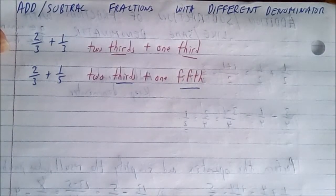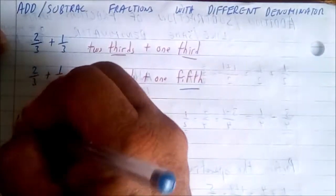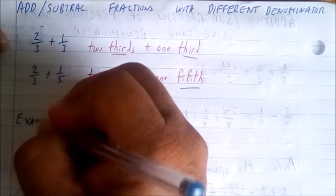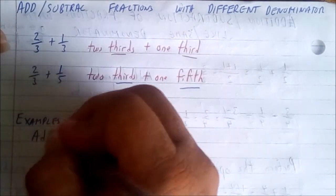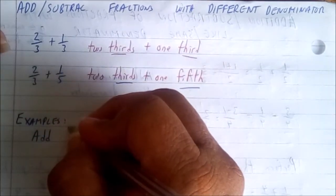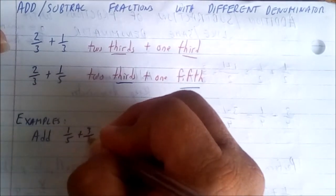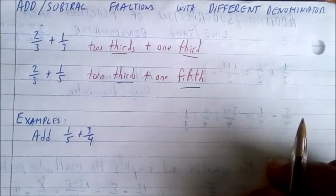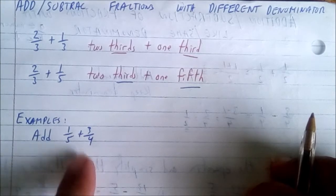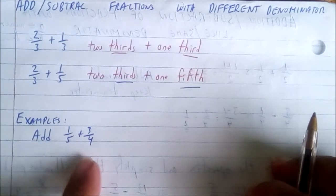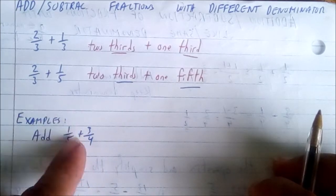So let's start with a few examples and then we proceed. Examples: Add one fifth plus three fourths. We'll be adding those two. We need to express each fraction as an equivalent fraction that has the LCD or a common denominator.